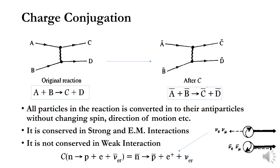The second one is charge conjugation. Charge conjugation means all the particles in the reaction are converted into their antiparticles without changing the spin or direction of motion. So A is converted into A-bar, C into C-bar, B into B-bar, and D into D-bar. The arrow remains the same and the particles remain at the same positions, but they become their antiparticles. Similar to the time reversal operation, if this resulting reaction is possible, then C — the charge conjugation — is conserved in this reaction.